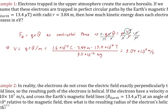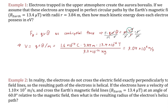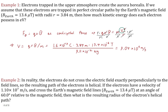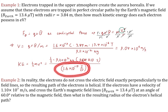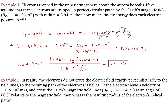Then we convert to kinetic energy in electron volts. The kinetic energy is one-half MV squared. Having solved for the velocity, we plug everything in. The conversion factor from joules to electron volts is 1.6 times 10 to the negative 19 joules per electron volt. We end up with 233 electron volts.